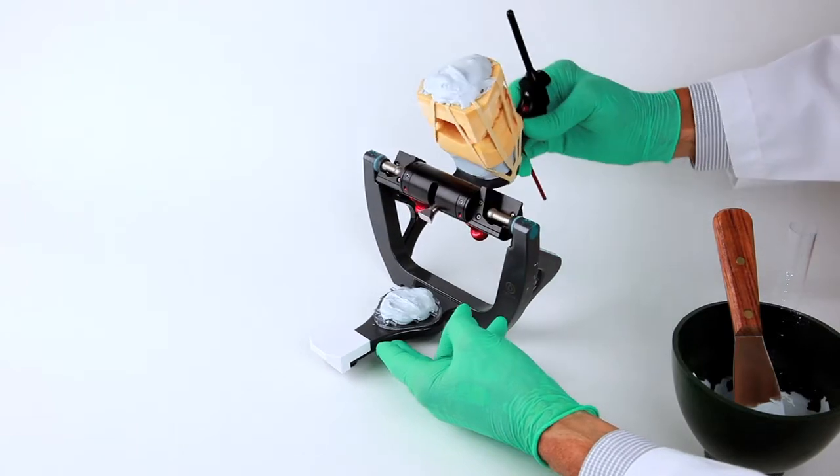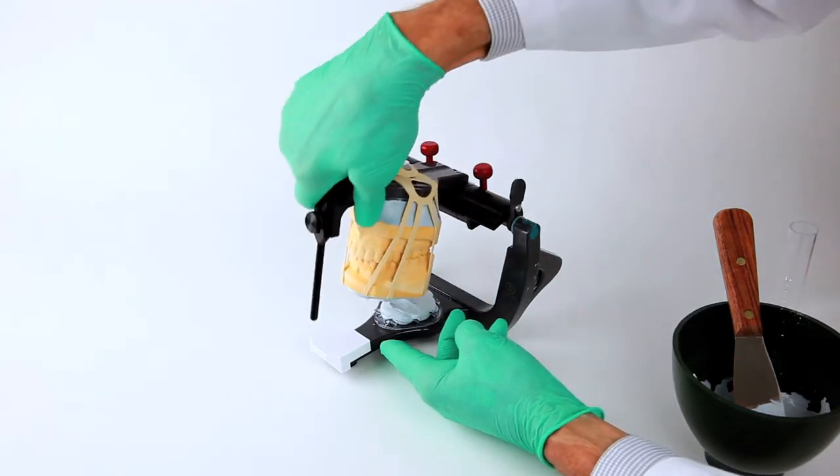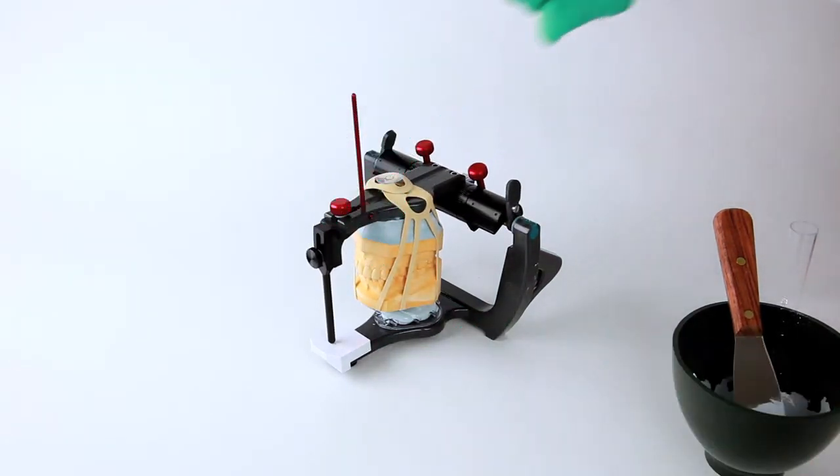Once an adequate amount of mounting stone is in place, the articulator arm is then closed. Light tapping on the upper articulator arm is recommended to make sure the incisal pin is seated on the incisal guide table. At this point, the articulator can be left as is for the stone to set or it can be inverted or whichever is desired.